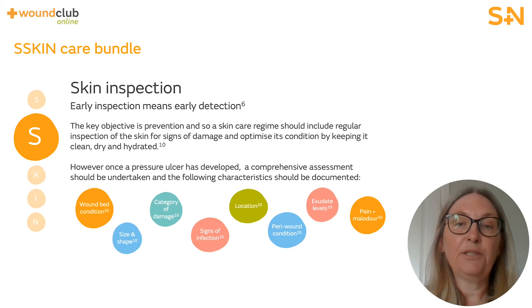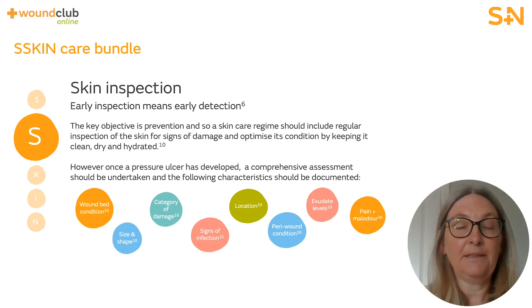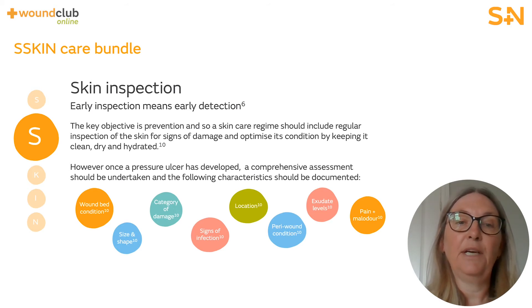The acronym BEST SHOT from the Stop the Pressure campaign is a useful reminder of specific areas of the body to check: B — Buttocks, E — Elbows and Ears, S — Sacrum, T — Trochanters, S — Spine and Shoulders, H — Heels, O — Occiput and Others, T — Toes.